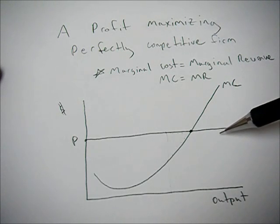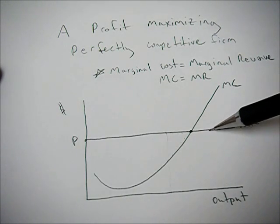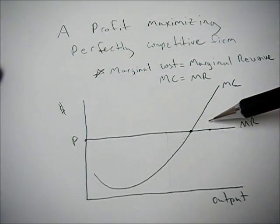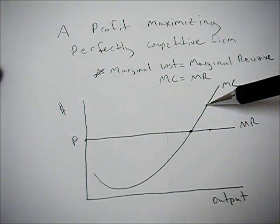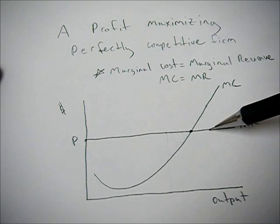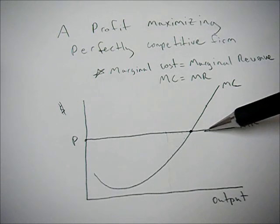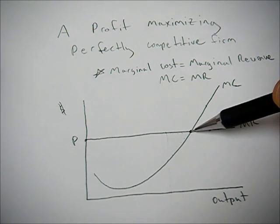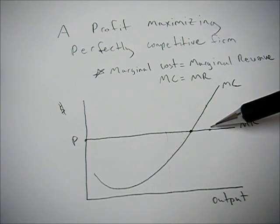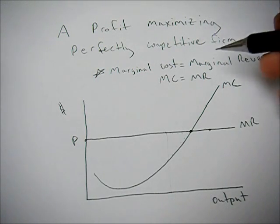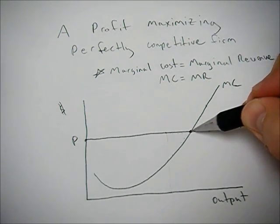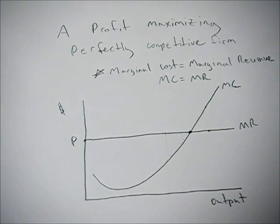If you're to the right of this point, then your cost is greater than your revenue. So when you sell that additional unit, it costs you more to make it than you're receiving on the margin. So you're losing money. You produce less units until you get to this point here. So if you're to the left or to the right, you're losing out on potential profits. If you're right here, that's where you're maximizing profits.